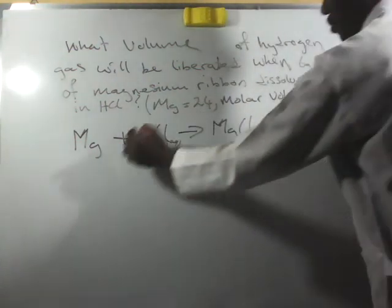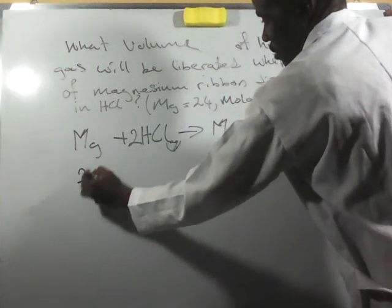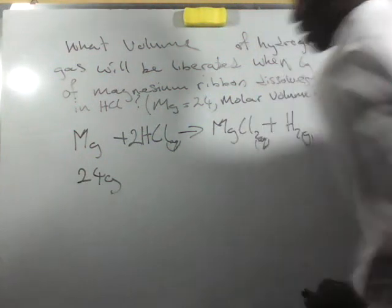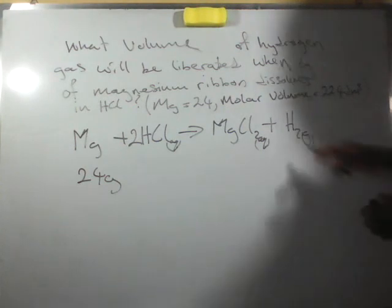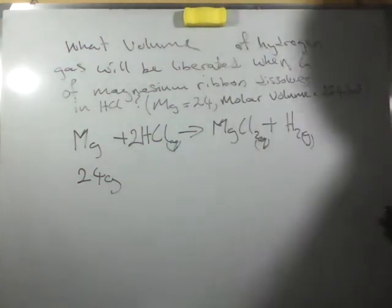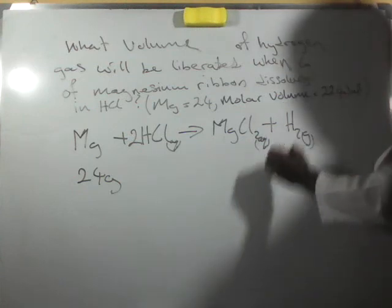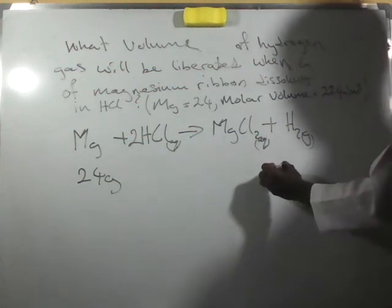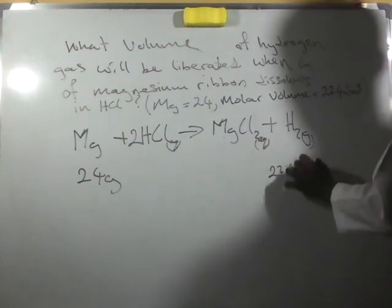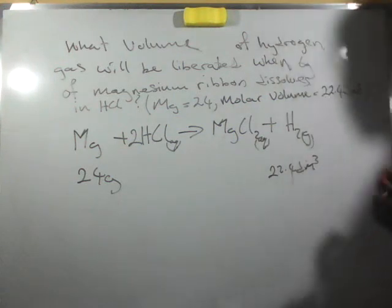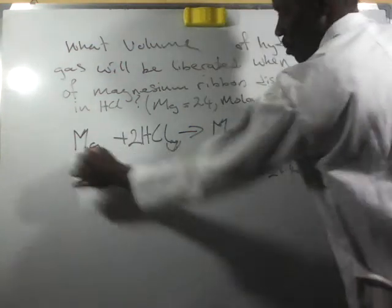We have magnesium. The molar mass of magnesium here is 24 grams, and then the hydrogen produced here is, since it's one mole, we have it to be 22.4 dm³, because looking at this it's one mole and one mole.